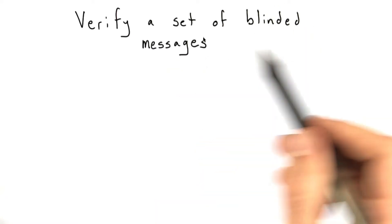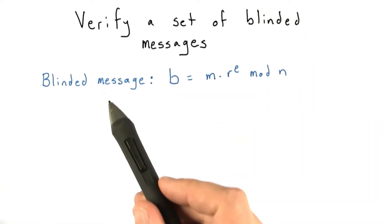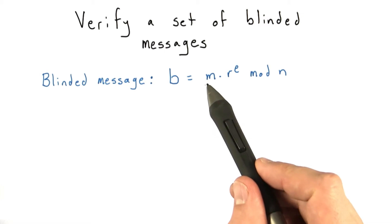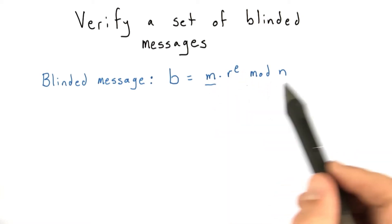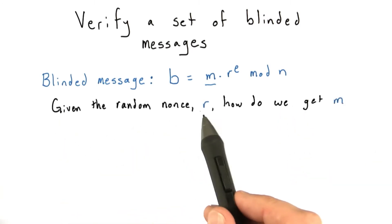For this problem, you are asked to verify a set of blinded messages, where blinded message b equals the original message m times r, a random nonce raised to the power e, mod n. And so the question is, given the random nonce r, how do we get m from b?